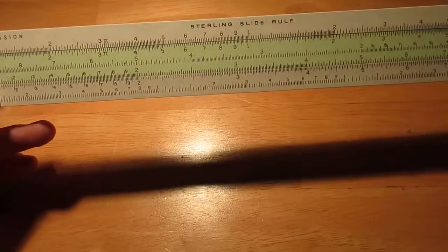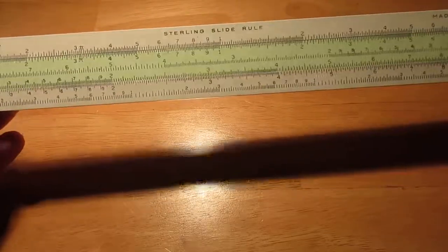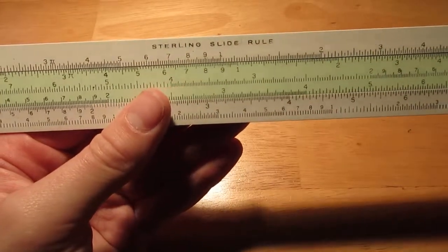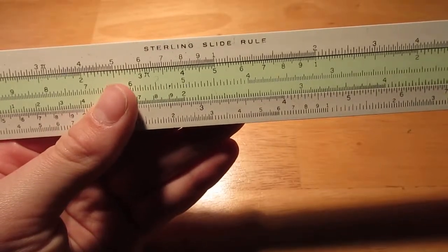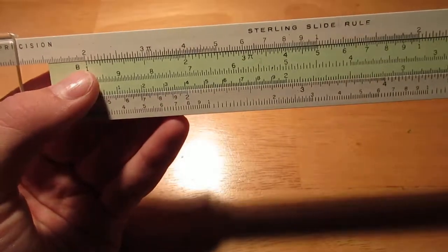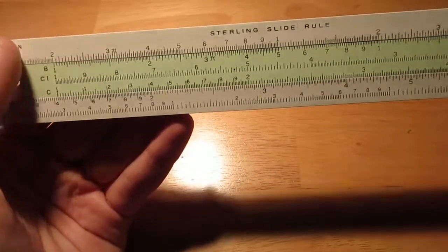Today we will be covering division. To divide on a slide rule, you take the number you would like to divide, say 10, and the number by which you would like to divide it, say 5. You move the 5 under the 10. You find where the 1 is, and the 1 is under the 2. So 10 divided by 5 is 2.